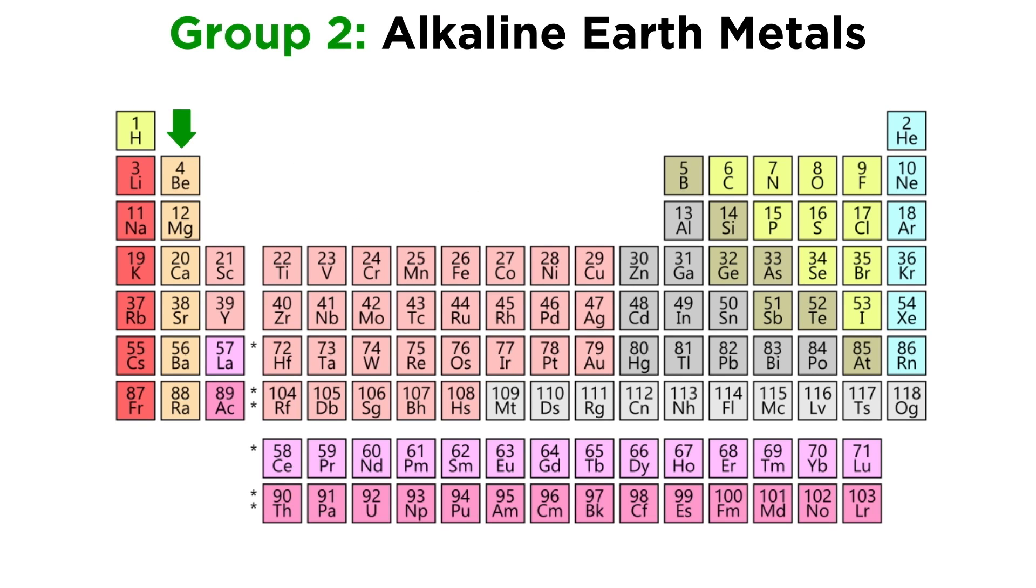Group two is called the alkaline earth metals. These range from beryllium to radium, and will share similar metallic properties, though they will react with oxygen in a one-to-one ratio.